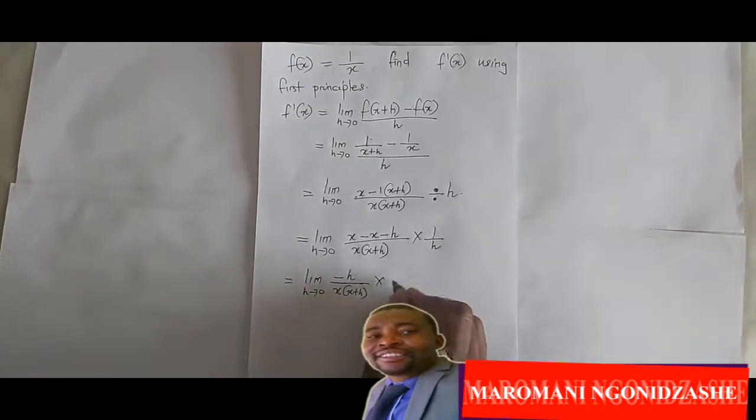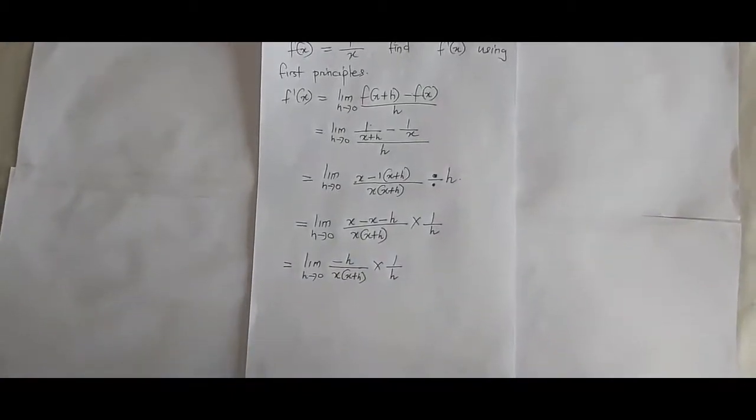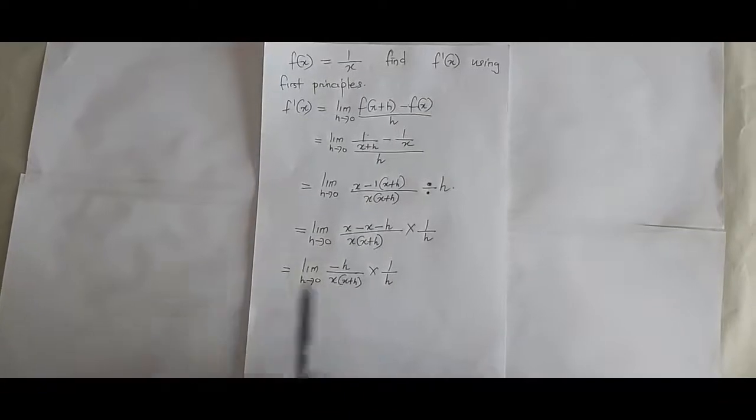Multiplied by 1 over h, and then from there we can see that h cancels with h.